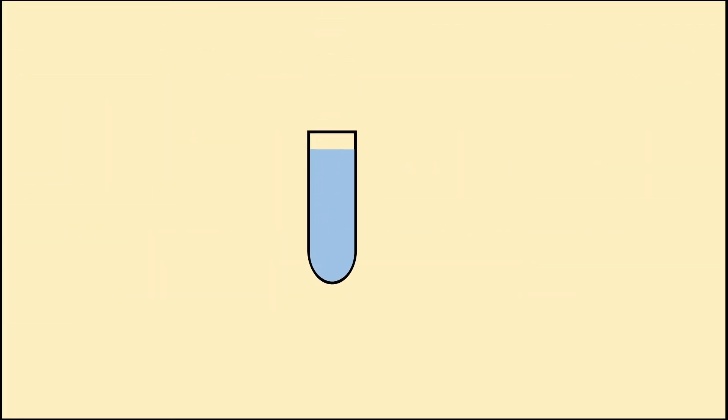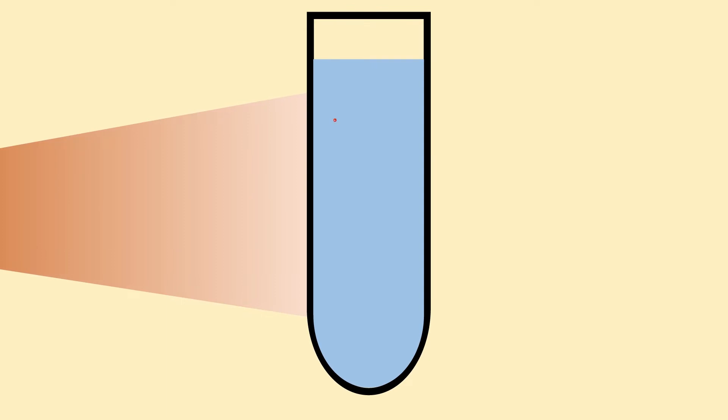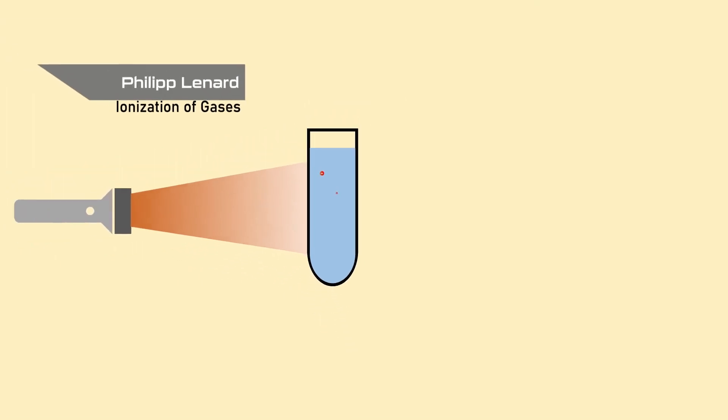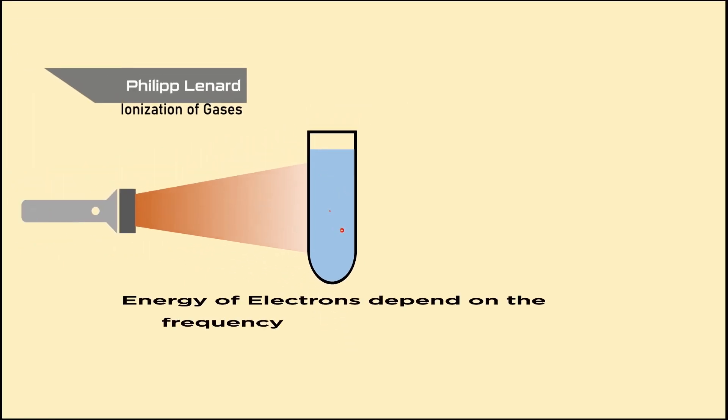A few years later, Philip Leonard discovered the ionization of gas from ultraviolet light and observed that gas absorbs the incident light and emits electrons, whose energy depends on the frequency of light, not on the intensity.